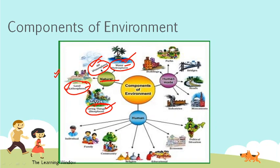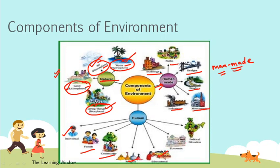The second component is the human-made environment. Human-made environment includes things such as buildings, parks, bridges, waterways, and factories. All these structures and monuments are human-made. These are the basic components of environment as explained in the NCERT textbook.